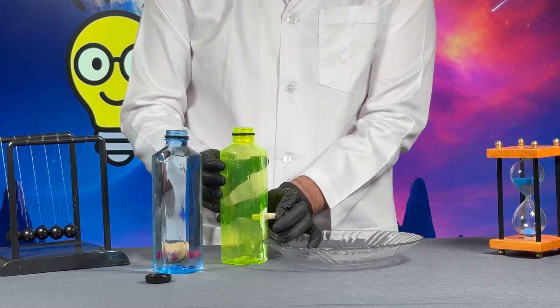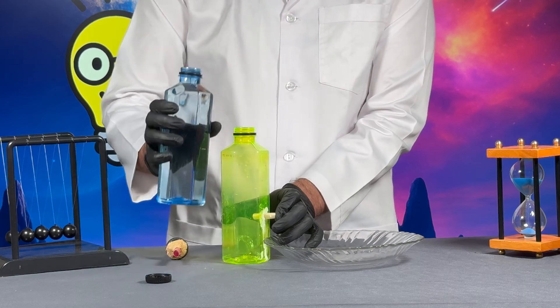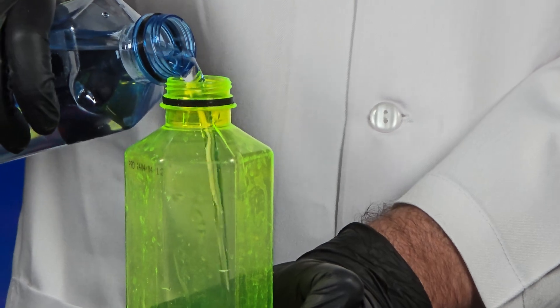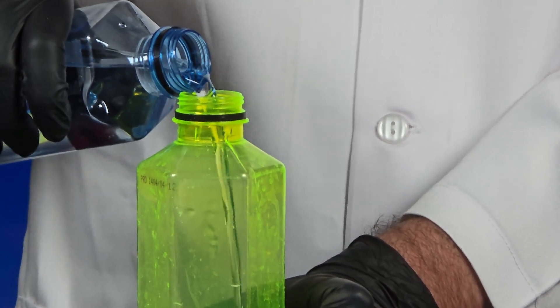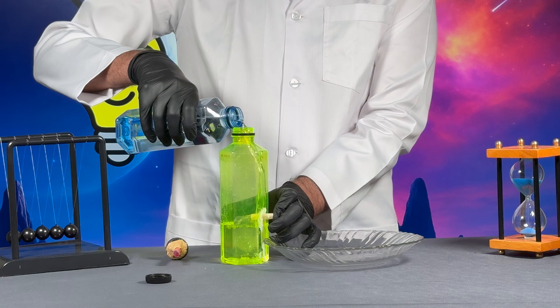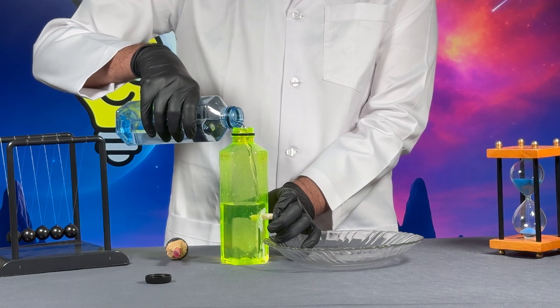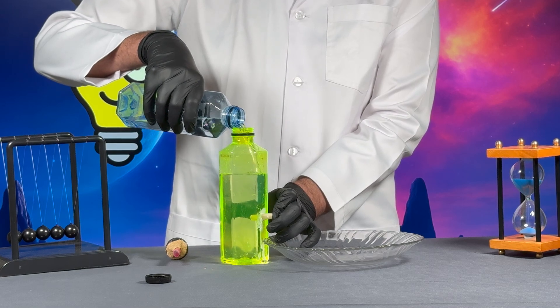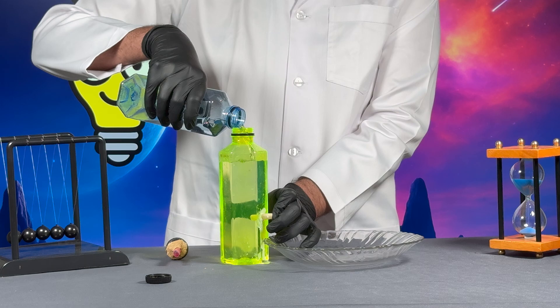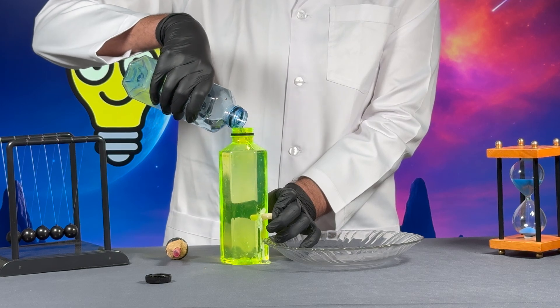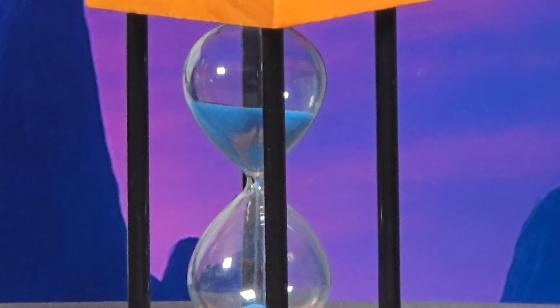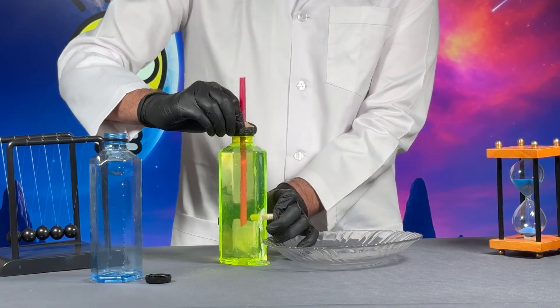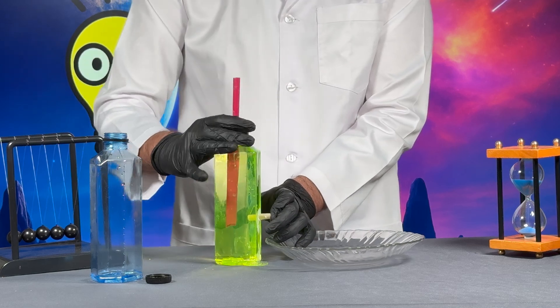Next we place our hand over the side straw, fill the bottle completely with water, and then screw the cap on tight while still covering the side straw.